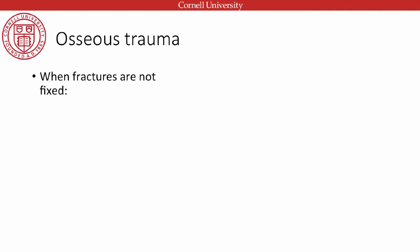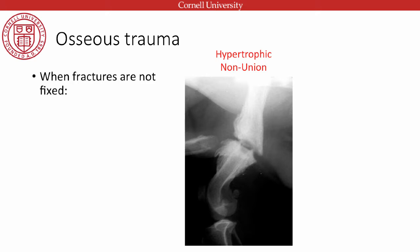When fractures are not fixed, they can form a hypertrophic non-union — the bone creates its own new joint because it can't heal. With excessive movement, the callus fails to bridge the fracture and instead a fibrous joint forms, with very dramatic thick new bone callus. If we stabilize and débride it, it would probably heal. Without intervention, the animal develops an extra joint at that level.